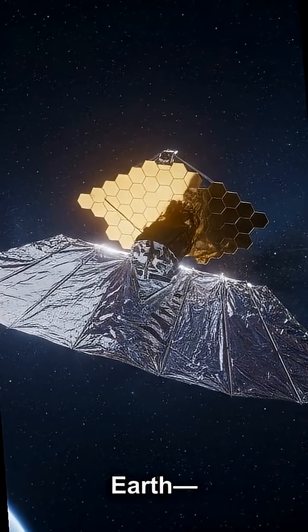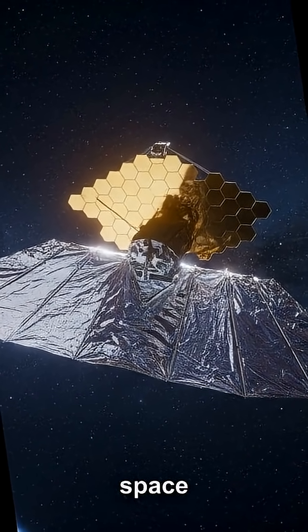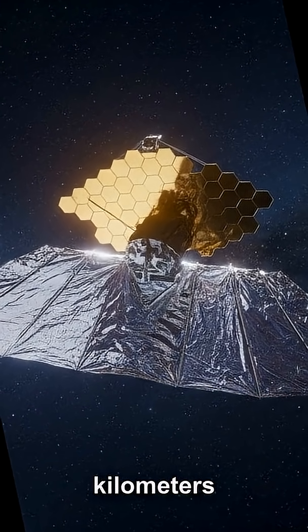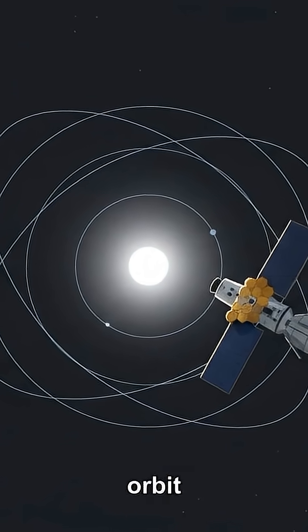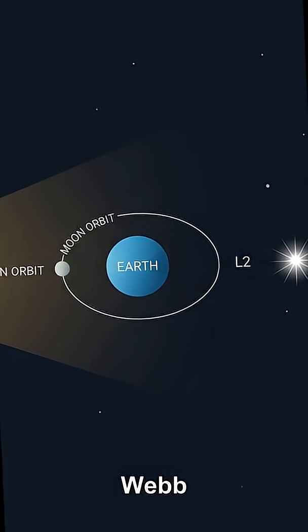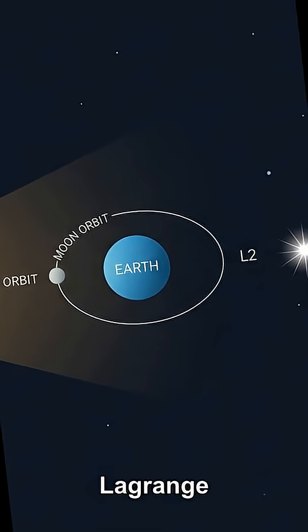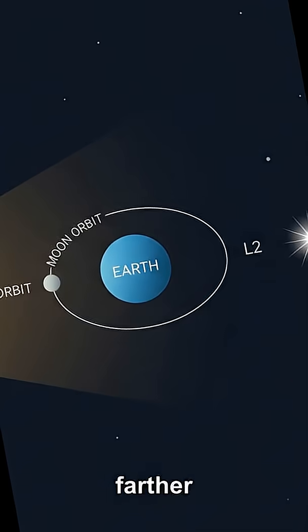James Webb doesn't orbit Earth. It orbits a spot of empty space 1.5 million kilometers away. How can you orbit nothing? Webb sits near the Sun-Earth L2 Lagrange point, about four times farther than the Moon.